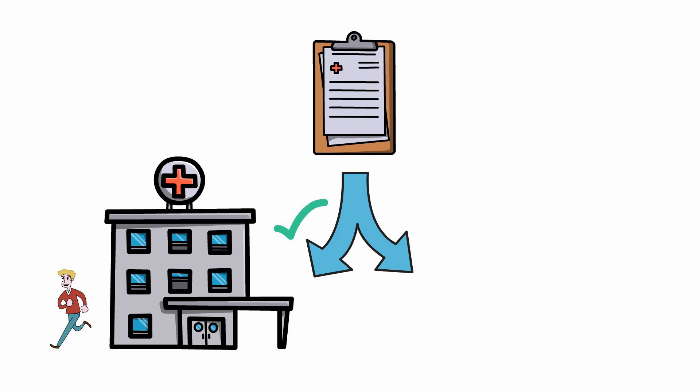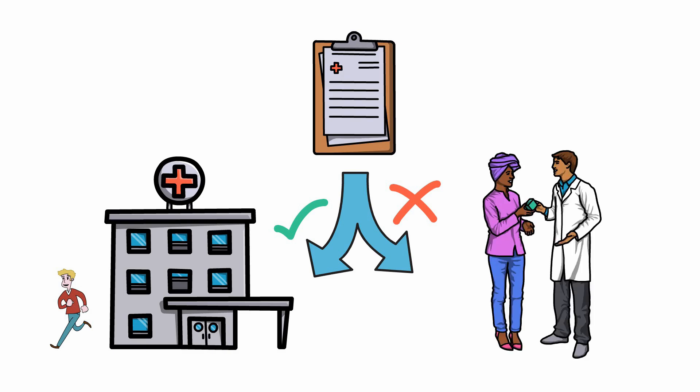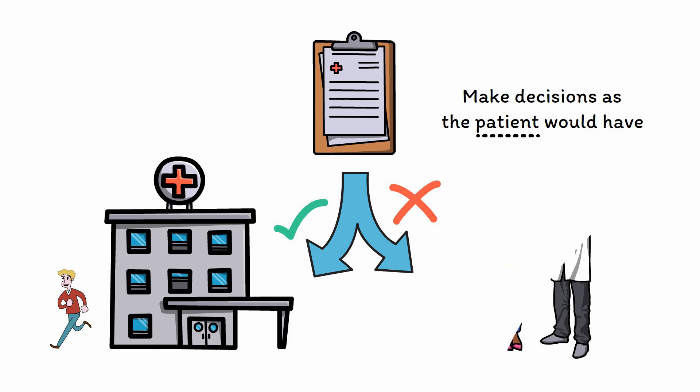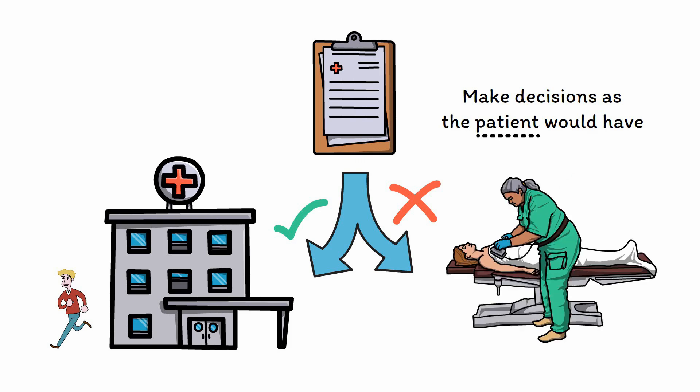In cases where a patient lacks capacity, a surrogate decision maker should be sought. In many cases, this will be a spouse, family member, or close friend, but ultimately the most important thing is that the surrogate decision maker should be able to make decisions as the patient would have, rather than basing the decision on the surrogate's own values and beliefs. In cases where the patient lacks capacity but a surrogate decision maker cannot be found, the treating team may be required to make decisions on the patient's behalf.